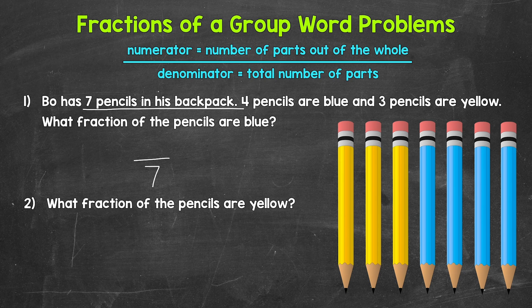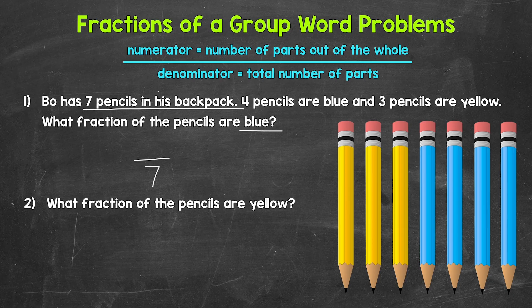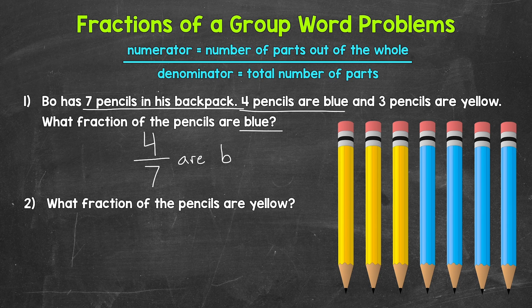Now we need the numerator. That's the number of parts out of the whole that we are interested in, that we are focused on. We can think of the numerator as the number of parts we are talking about. We want what fraction of the pencils are blue. So the number of blue pencils is going to be our numerator. Well, Bo has four pencils that are blue, so four is our numerator. Four out of the seven pencils are blue, so our fraction here, four-sevenths. Four-sevenths of the pencils are blue.